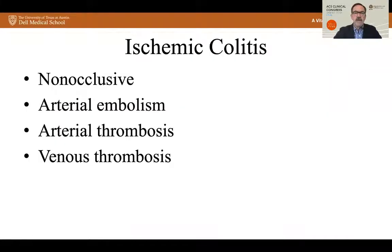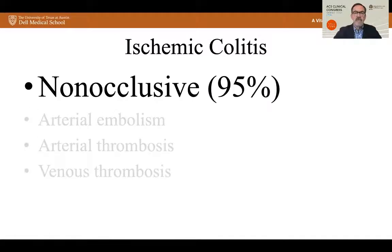Ischemic colitis may be caused by non-occlusive ischemia, arterial embolism, arterial thrombosis, or venous thrombosis. However, the vast majority of cases — up to 95% — are from a non-occlusive cause, again in contrast to small bowel mesenteric ischemia.